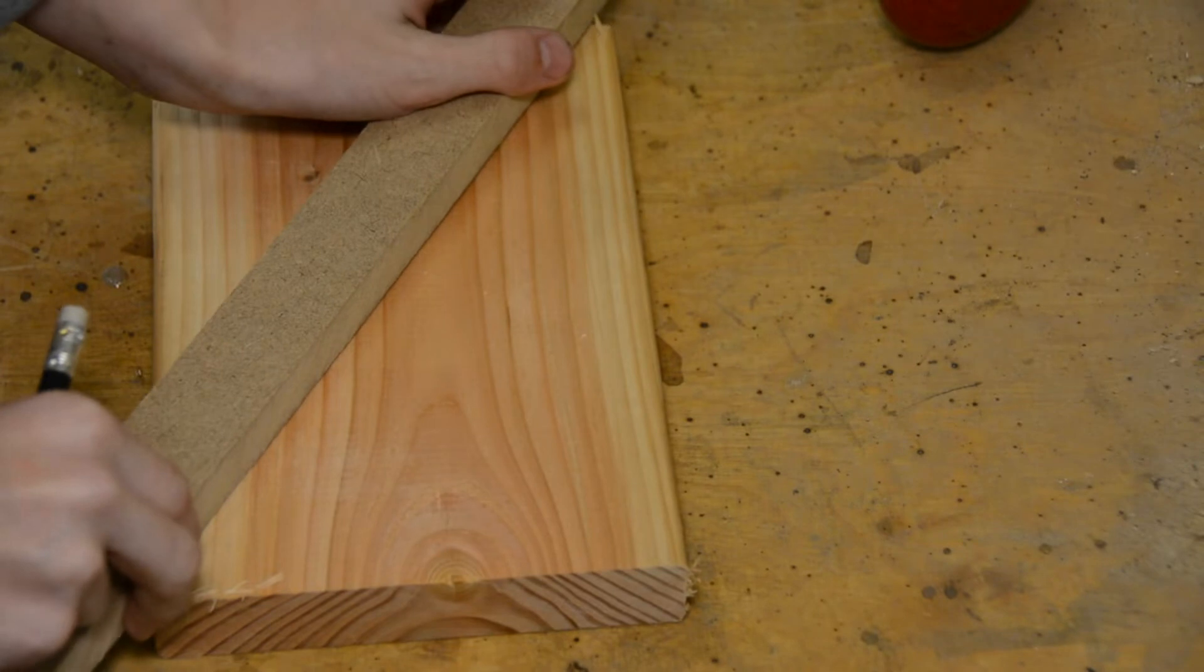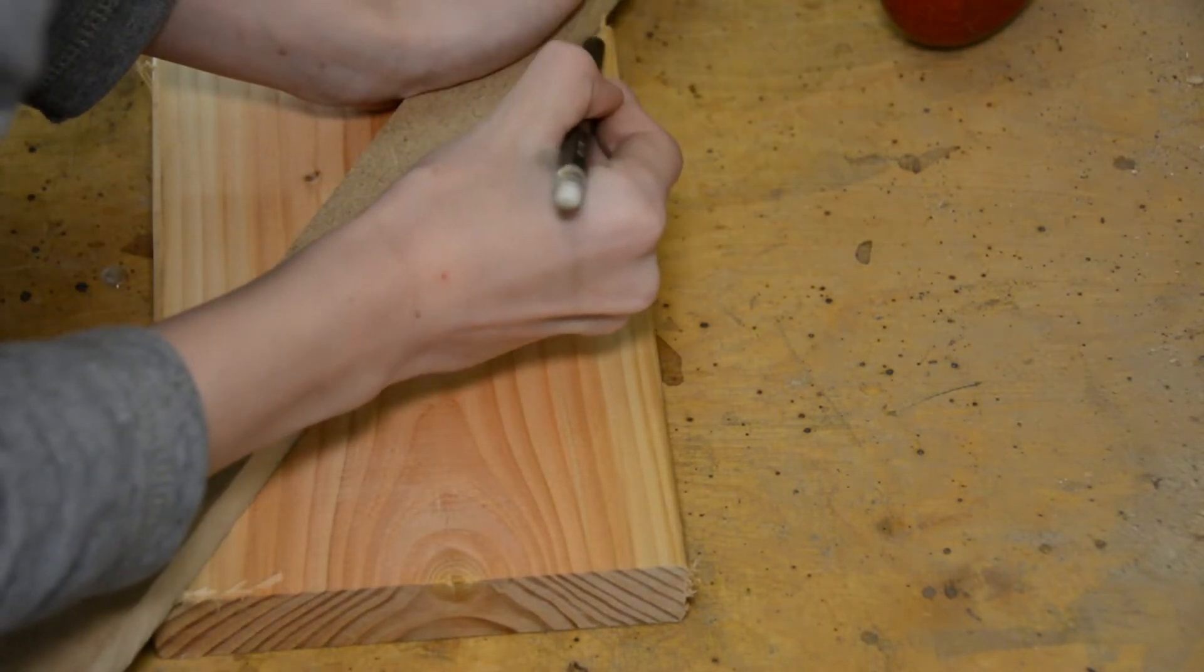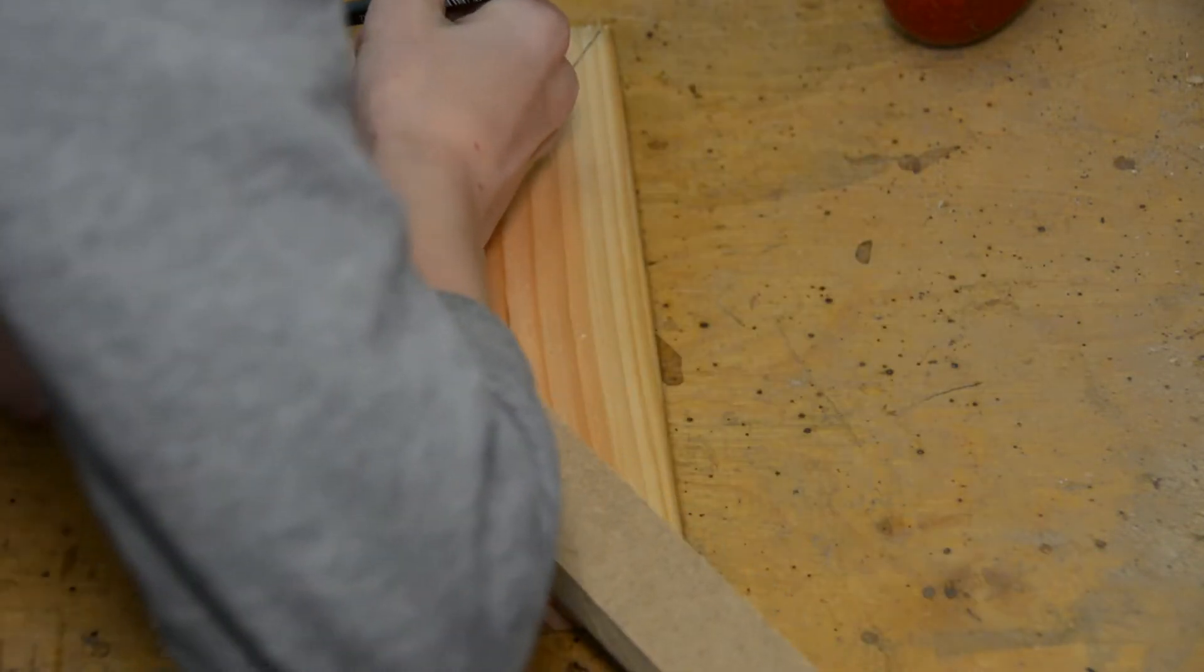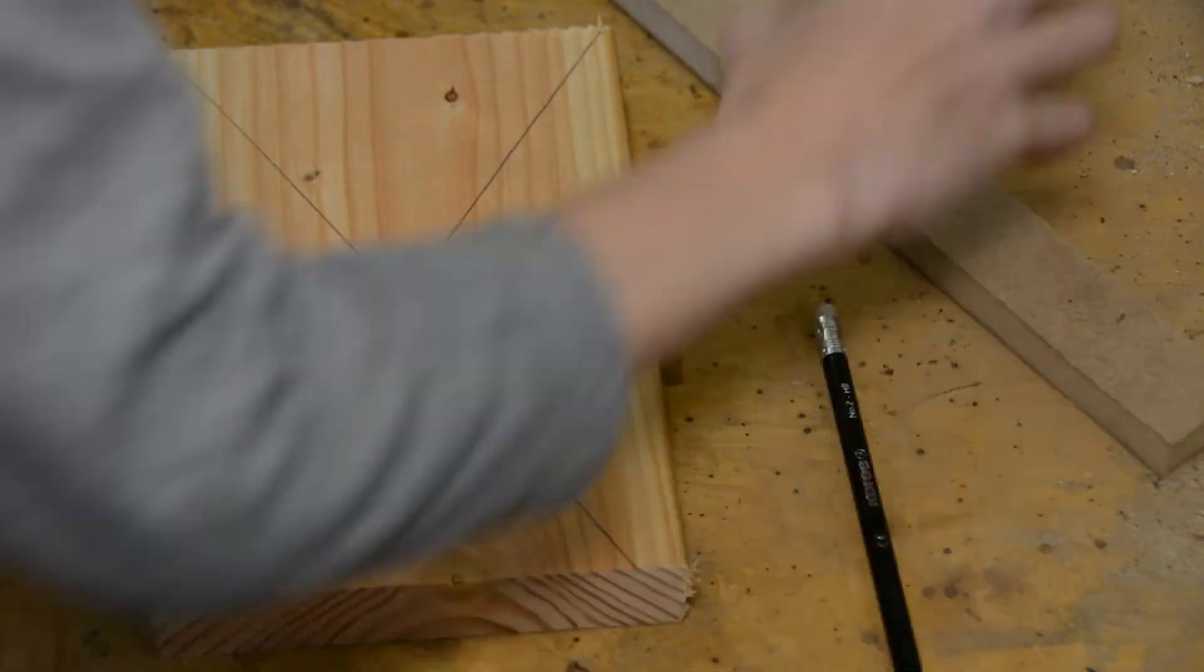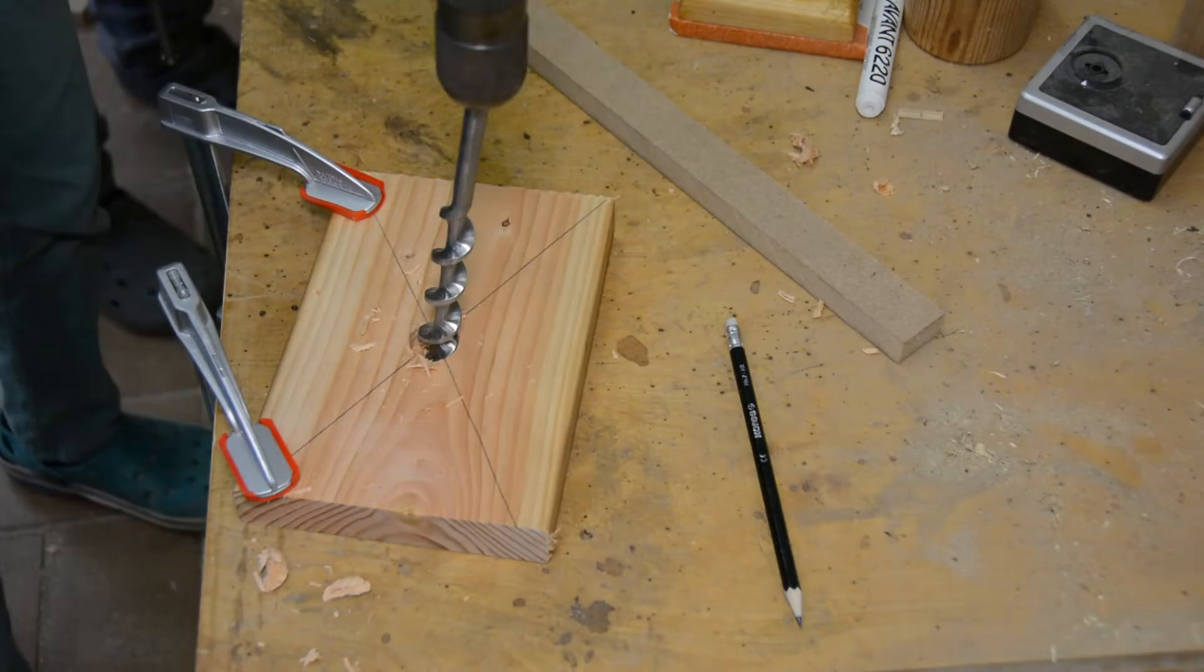For the rocket launcher we need 5 wood scrap pieces in total. All the dimensions can be found in the plans on our website. For the largest piece, the kids connect the corners to find the center point of the board. Here they use an old hand drill with an auger bit to bore a hole.